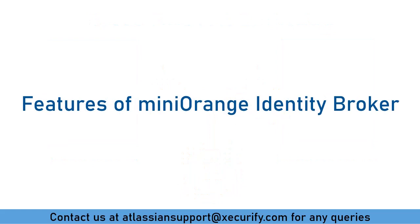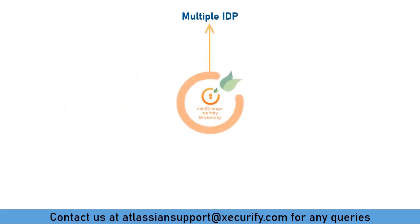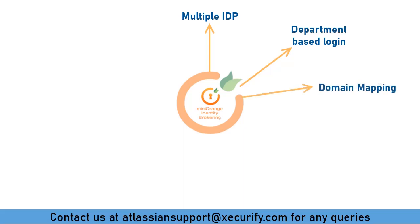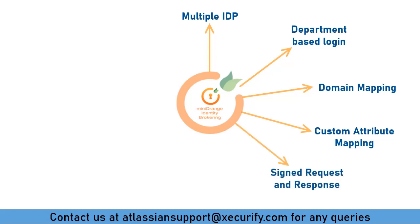Let's see a few features of Minirange Identity Broker. Multiple IDPs: you can configure multiple identity providers to authenticate different types of users with different IDPs. Multiple department-based login allows users to redirect to their IDP based on their department. Domain mapping allows users to redirect to their IDP based on their email domains. Custom attribute mapping is a provision to update the user profile attributes in the application with the user attributes received from the IDP. Secure your SSO with signed requests and encrypted SAML assertions. Username transformation extracts the required username from the received attribute using regular expressions.